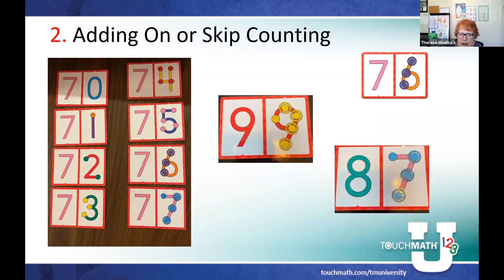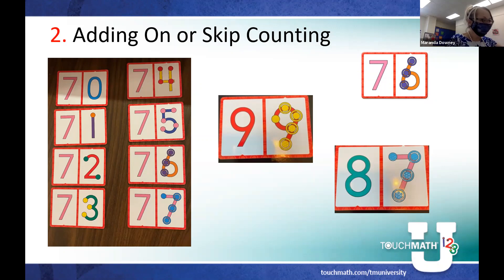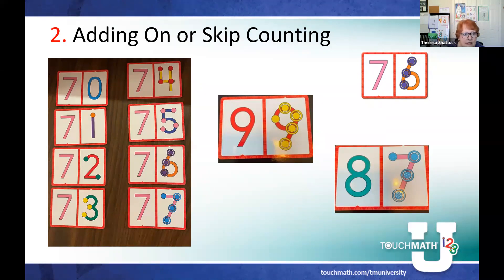When we teach addition in Touch Math, the first step is counting all the touch points. Then we go to the next step, which is adding on. Later in multiplication, we do skip counting. So here I've taken our Touch Math dominoes - this is the red set - and I've lined them up like we just saw the real dominoes. I have seven-zero, seven-one, all the way to seven-seven. With our dominoes I can't flip this over and do seven-eight because it would be upside down, but I can use this to skip count.